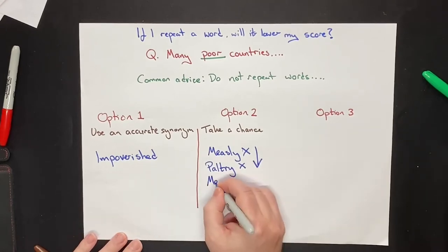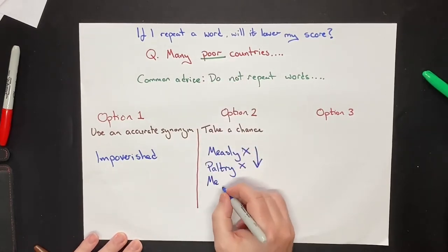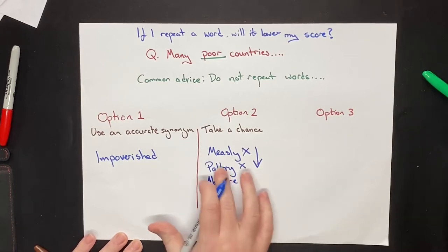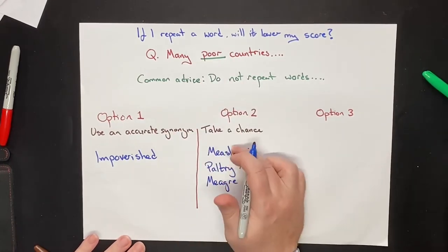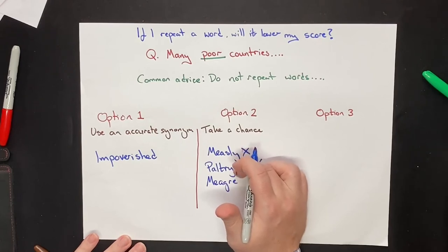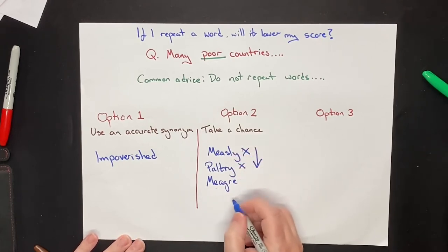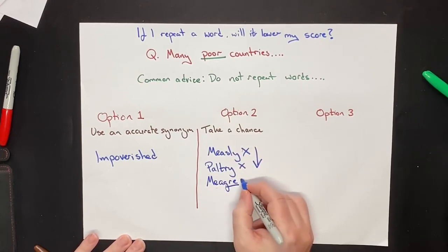We had another student, when I gave this exercise to our students, that said meagre. Meagre and poor are actually much closer synonyms than measly and paltry, but they spelled it wrong. The spelling is wrong.